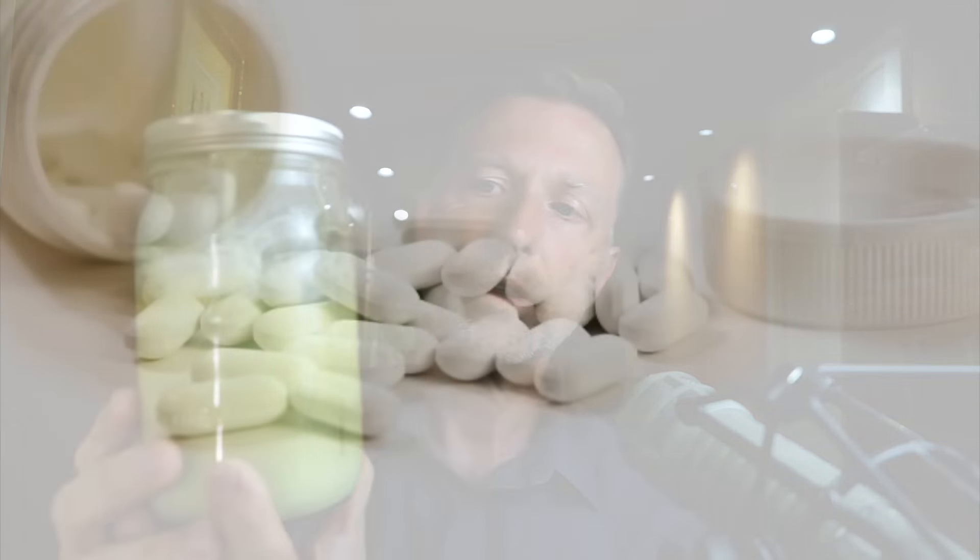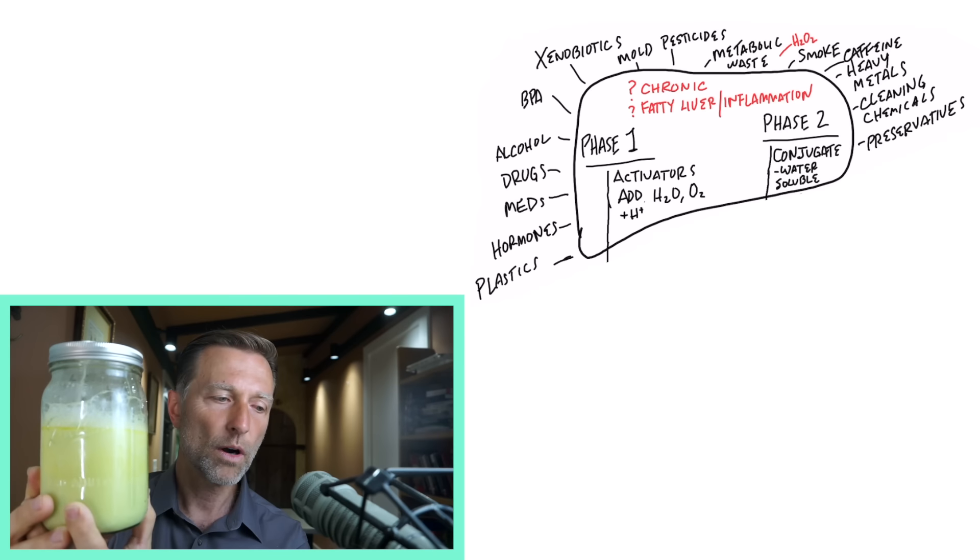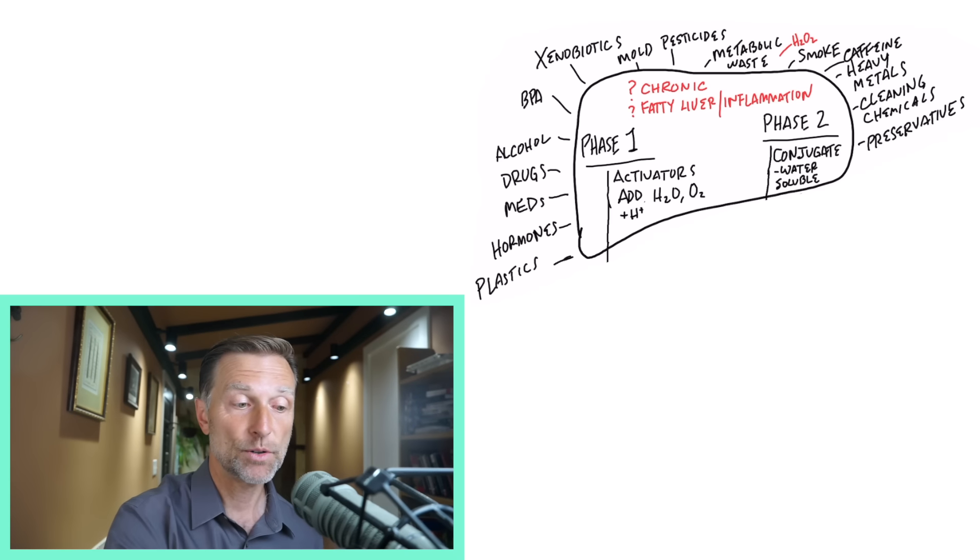So what these enzymes do is basically add something to the fat and then they break it down into something that can actually go through the body. This is another example that I use with bile salts and what bile salts can do for fat, but it's a good analogy also for what these enzymes do to the fat-soluble poisons.